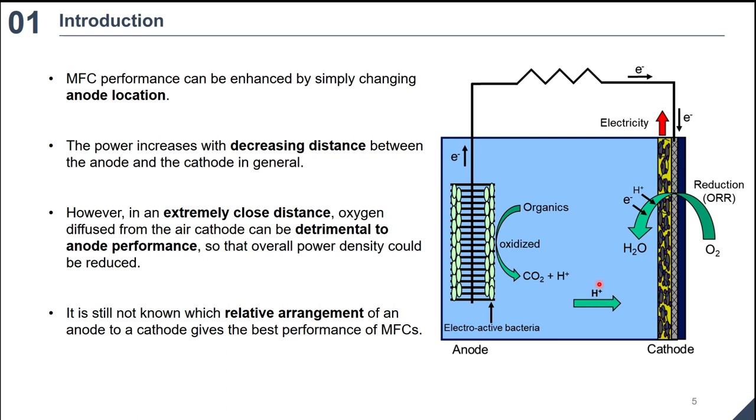MFC performance can be enhanced by simply changing anode location. For example, power increases with decreasing distance between the anode and the cathode in general. However, in an extremely close distance, oxygen diffused from the air cathode can be detrimental to anode performance, so that overall power density could be reduced. But, it is still not known which relative arrangement of an anode to a cathode gives the best performance of MFCs.